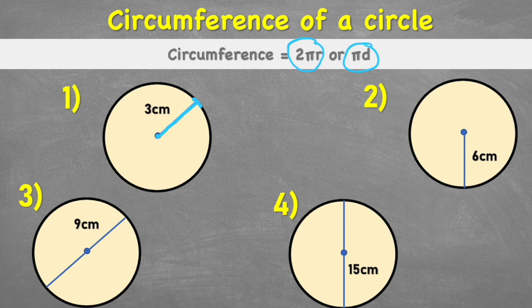Essentially, we need two radii multiplied by pi. In example three, we're given the full diameter — the longest chord across the center of the circle. When given the diameter, we don't need to do two times radius because the diameter is already two times the radius. So we simply do πd — pi times the diameter.